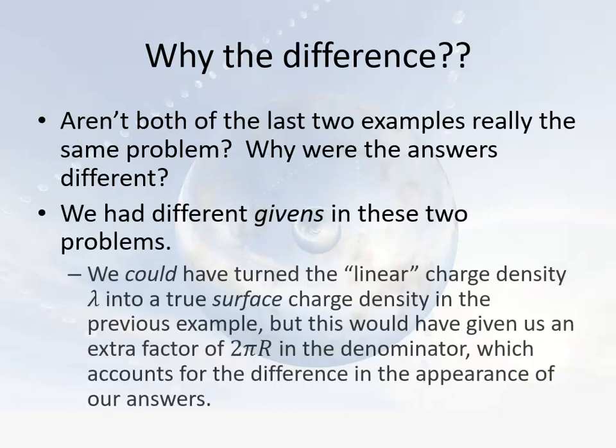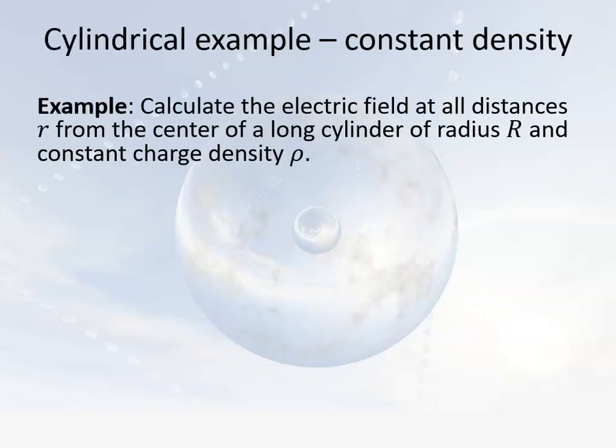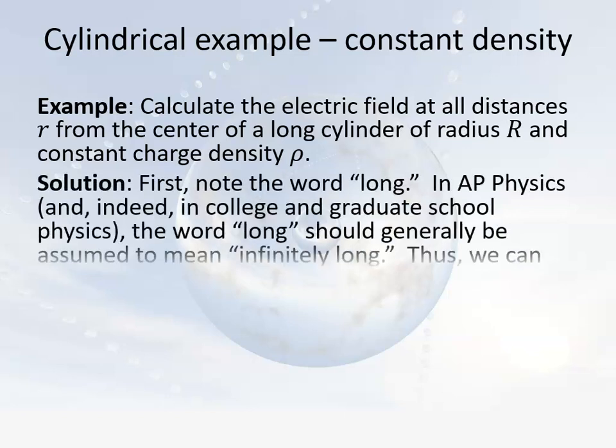So were the answers really different? You could have converted the linear charge density into a true surface charge density, but that would have introduced an extra factor of 2πR in the denominator, which accounts for the difference in how the answers look. Next, let's turn our attention to a constant density cylinder of radius big R and constant charge density rho. And as you can probably imagine from the pattern of our previous videos, the next example after this will be a situation where the density is not constant.